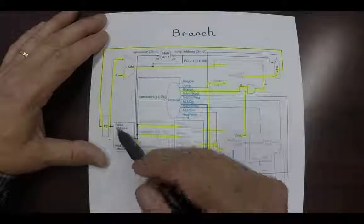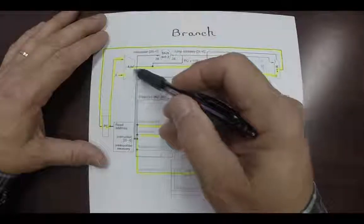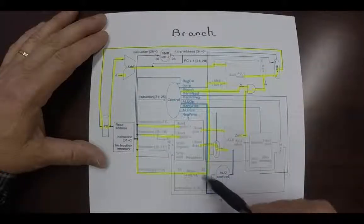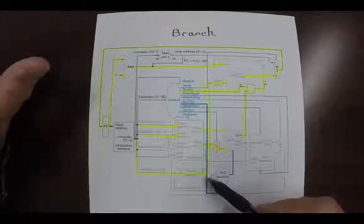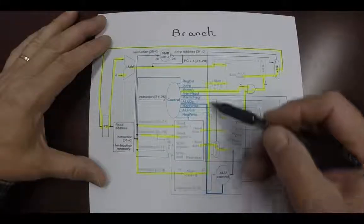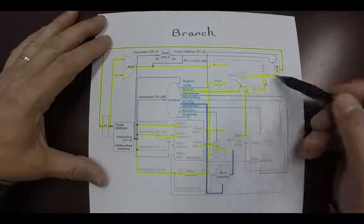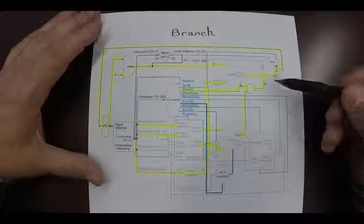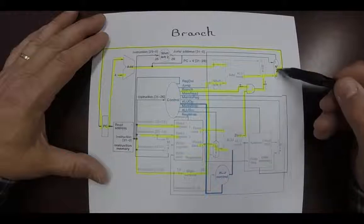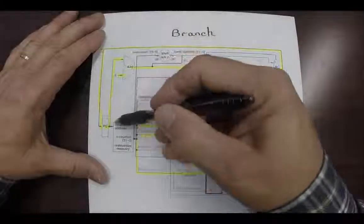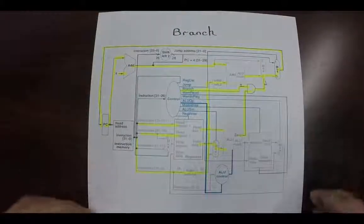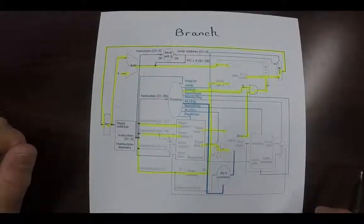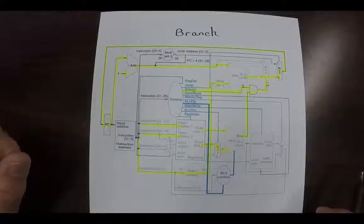To calculate the address, the program counter plus 4 is sent onto here and then the immediate field is sign extended to 32—sign extended meaning it can go either backward or forward—and added to the program counter. And then if the 0 result is true, in other words it's equal, that will be sent forward and the program counter will be updated to it. And that is a very brief explanation of the instructions in MIPS single cycle architecture.